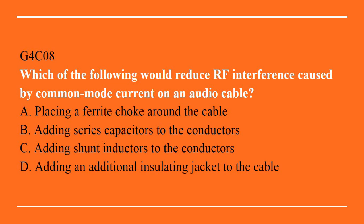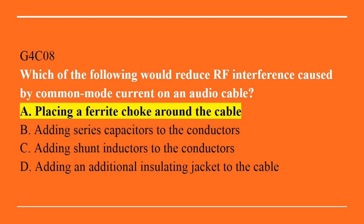G4C08: Which of the following would reduce RF interference caused by common mode current on an audio cable? A. Placing a ferrite choke around the cable. B. Adding series capacitors to the conductors. C. Adding shunt inductors to the conductors. Or D. Adding an additional insulating jacket to the cable. The correct answer is A. Placing a ferrite choke around the cable.